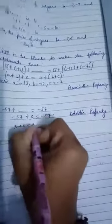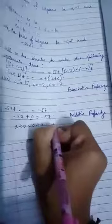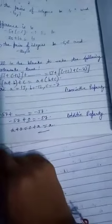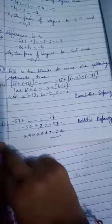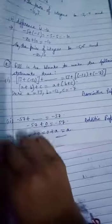A plus zero is equal to zero plus a is equal to a. This is our additive property. So you have to take care of all those properties and take a read from that properties. Thanks and have a nice day.